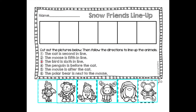For the rest of them, I'm just going to read what they say. Number three says the bird is sixth in line. Number four, the penguin is before the cat — so think about that, where that would go. Number five says the mouse is after the cat. And number six says the polar bear is next to the mouse.